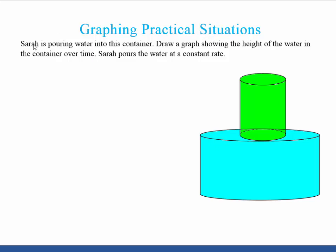In this example, we're going to be looking at Sarah, and Sarah is pouring water into this container. And you can see my container is made up of two cylinders, a large blue one and a smaller green one.